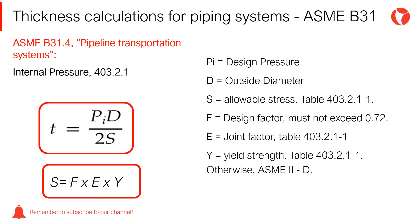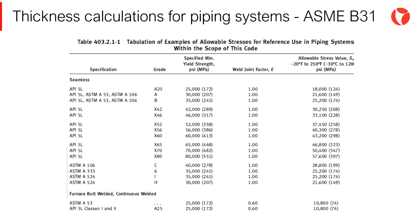In general, the maximum value allowed by the code is used to avoid penalizing the design, although the designer may use a lower value on special occasions. The table shown on the screen lists the different piping materials and their corresponding mechanical properties, where the code includes the safety factors for each material. As it can be observed, the column of the allowable stress includes the coefficients mentioned earlier.